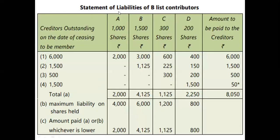So the creditors have 6,000 creditors in the shareholder, but they don't have to pay for the 1,500, but they don't have to pay for 500. 1,500. 2,4125; 1,125; 2,50. The maximum liability is 4,000; 6,200; 800.